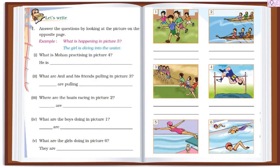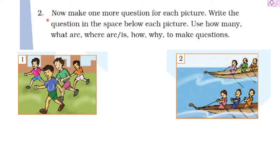Question number one is already done and now we are moving to question number two. Question number two says: now make one more question for each picture and write the questions in the space below each picture. Use the words 'how many,' 'what are,' 'where are,' 'is,' 'how,' and 'why' to make questions. We have to make our own questions using these words.